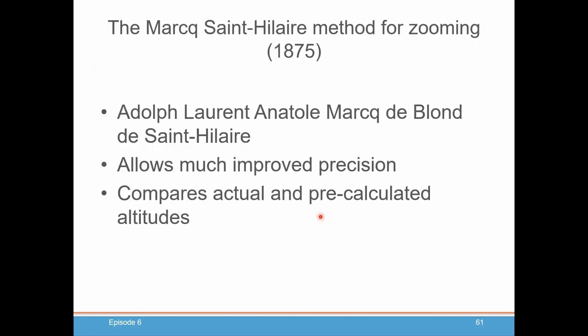Now we will not actually be using this particular method because it's not extremely accurate unless you've got a globe, the radius of like 9 feet to give you the kind of accuracy that you would really want. So we're going to use what's called the Marcq St. Hilaire method. I am not going to try to pronounce his name. I will totally screw it up. We're just going to call it Marcq St. Hilaire. This is going to allow us much, much improved precision down to one nautical mile or better.